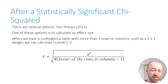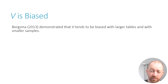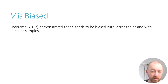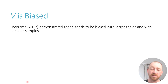So now I'm going to talk about the problem with Cramér's V and the correction. The problem, as indicated by Bergsma — and by the way this isn't my idea, I'm just explaining what Bergsma found in his article, I'll provide that reference in the description below — is that V tends to be biased with larger tables or with small samples. What that means is that it tends to overestimate the size of the effect if you have a very small sample or a larger table, like a three-by-five or even sometimes a three-by-three.